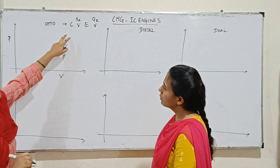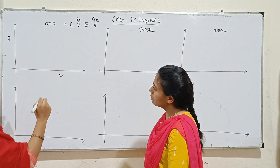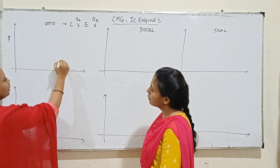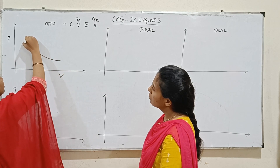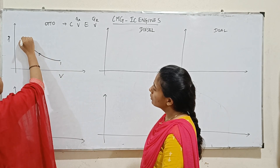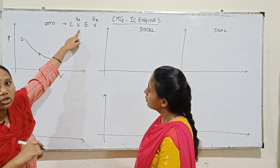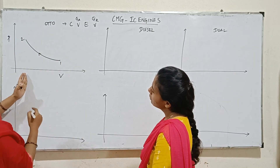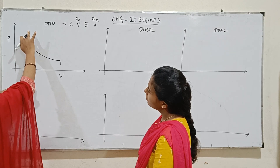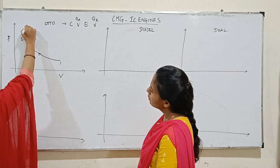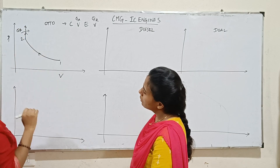In the Otto cycle, the first process is isentropic compression, where pressure increases from 1 to 2. The second process is heat addition at constant volume, so the volume is constant from 2 to 3.